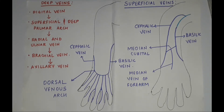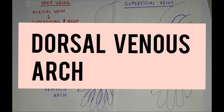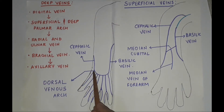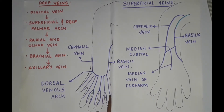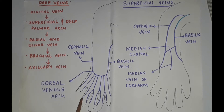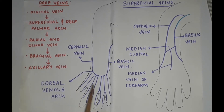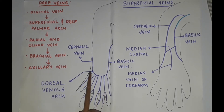Superficial veins. There are 5 superficial veins in the upper limb; let us look at each one of them in detail. The first vein is the dorsal venous arch. Its tributaries include 3 dorsal metacarpal veins, a dorsal digital vein from the medial side of the little finger, a dorsal digital vein from the radial side of the index finger, and 2 dorsal digital veins from the thumb. All these veins constitute the tributaries of the dorsal venous arch.